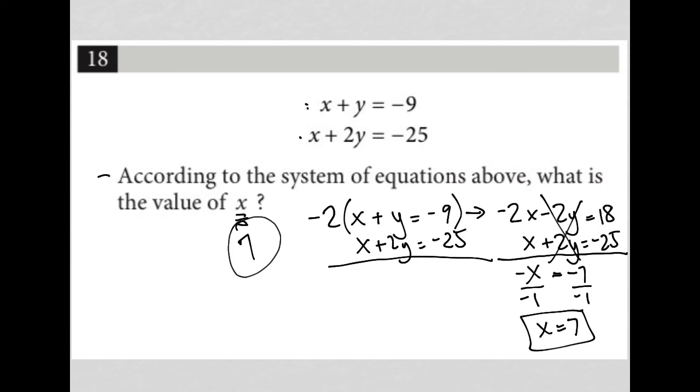This is the last example—these are all the system of equations questions from Test 1. Remember, the methods are elimination, where you can multiply one or both equations so that one variable eliminates, and substitution, where you replace a variable with what it represents—an equation or expression.